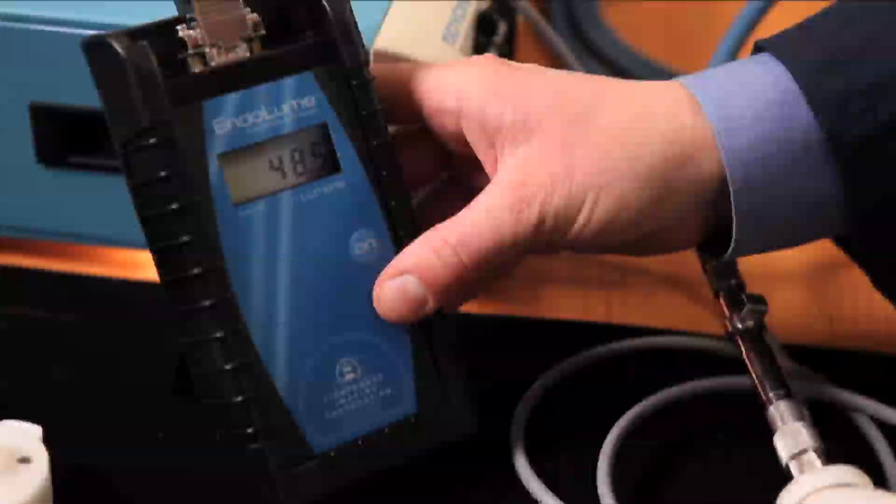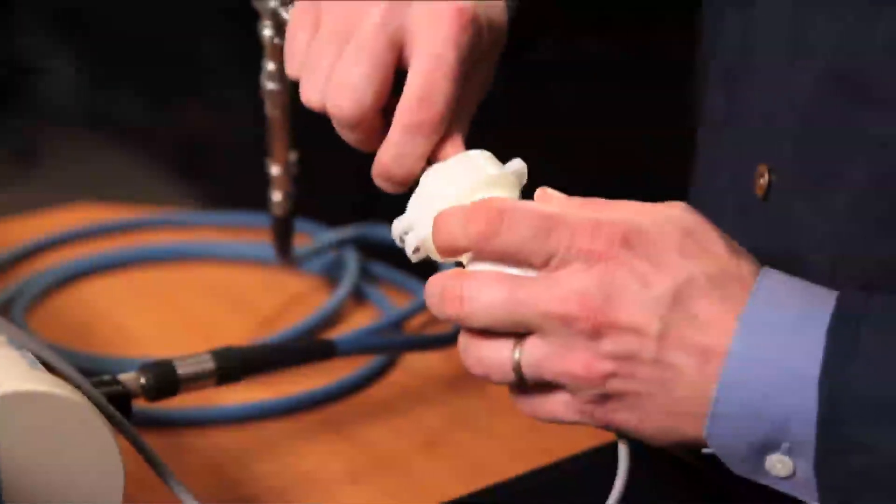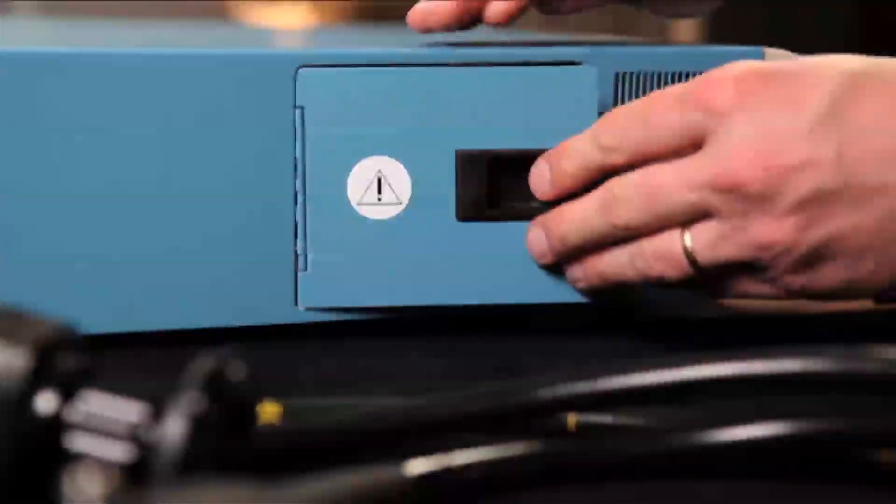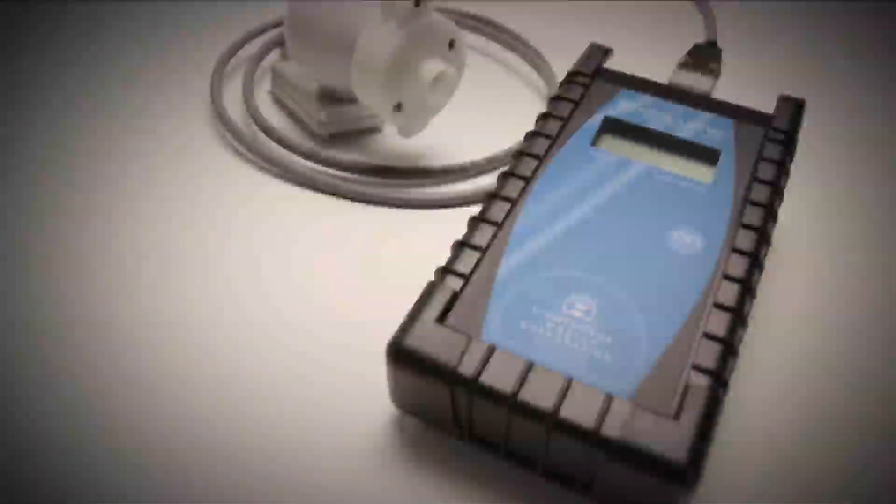With the Endolume, users can now establish evidence-based quality assurance for the hospital. Engineers and technicians can now use quantifiable measurements to manage endoscopic equipment. With the Endolume, the biomedical and clinical engineer can quickly isolate the source of an illumination problem and get the clinical staff back in business fast.